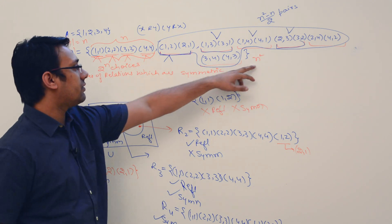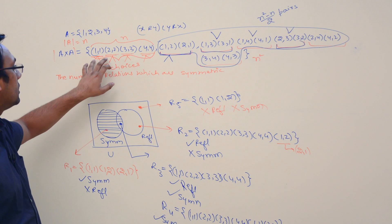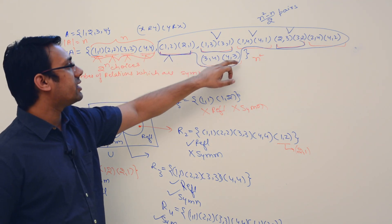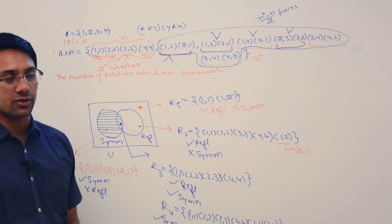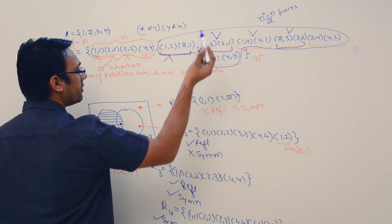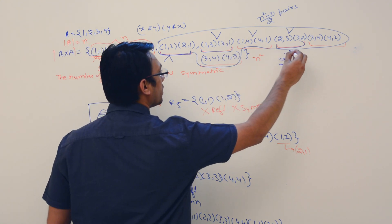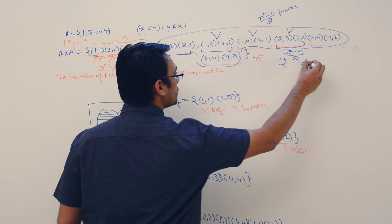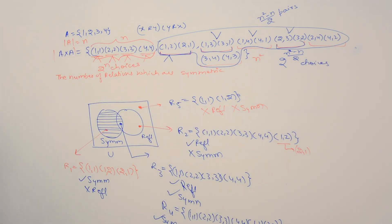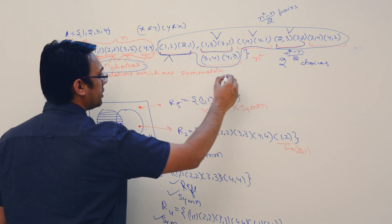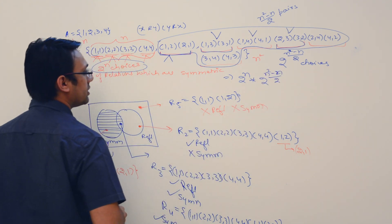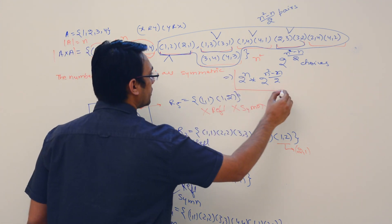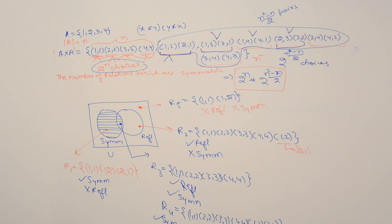Why is it (n² − n) / 2? Total we have n² elements. Out of these, n elements are diagonal elements. The remaining elements are n² − n. Because we have divided these remaining elements into pairs, we have (n² − n) / 2 pairs. For every pair we have two choices, so we have 2^((n² − n)/2) choices. Combined with the diagonal, the number of symmetric relations is 2^n × 2^((n² − n)/2).